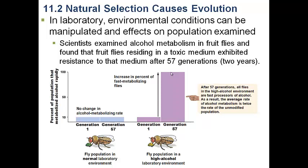But in the fruit flies that were exposed to alcohol, almost 100 percent of them can now metabolize alcohol. This is an example of natural selection. The fruit flies that couldn't metabolize alcohol died, and the ones that could — about 10 percent initially — reproduced. This shift is the result of natural selection, because it's the selective pressure imposed by the environment on the flies. This is a nice little experiment that demonstrates natural selection over a very short period of time.